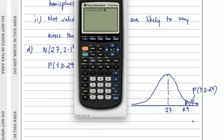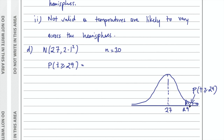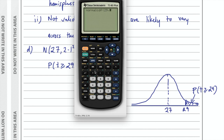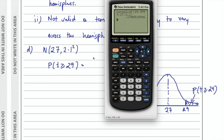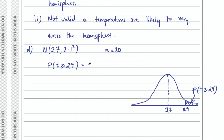Our answer was 0.17. The method mark comes from writing the probability notation P(temperature above 29). As long as you write that notation, you get that method mark. The question asks for the number of days, so we need to multiply the probability by the number of days in our sample. So 0.17 multiplied by 30.